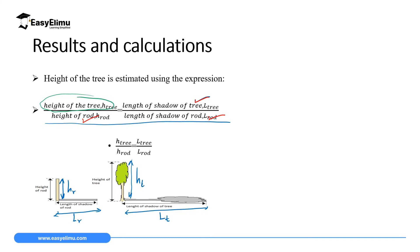The relationship is: height of the tree divided by height of the rod equals length of the shadow of the tree divided by length of the shadow of the rod. That is: HT / HR = LT / LR. Heights are on one side and shadow lengths are on the other. The larger value is in the numerator in each ratio. Let's do some examples to understand this better.